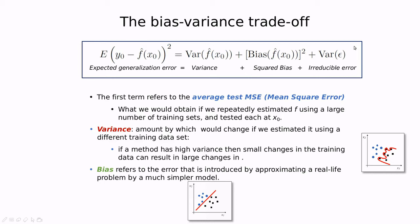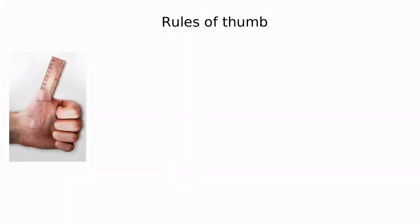We have these two sources of error. And then we have this irreducible error, which is something that we cannot control, and is probably related to the quality of the data or the sensors or the machines used to collect the data. I'm going to give you a couple of rules of thumb to discuss this tradeoff between bias and variance.